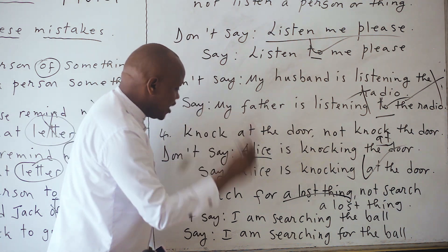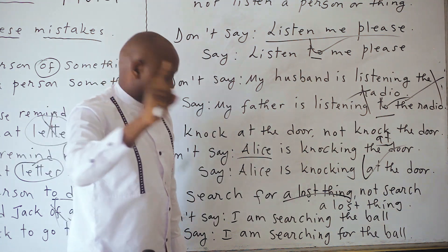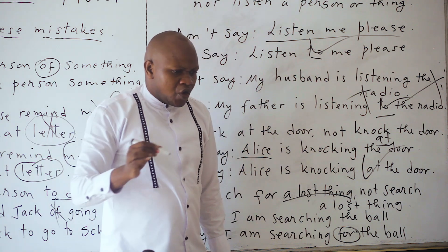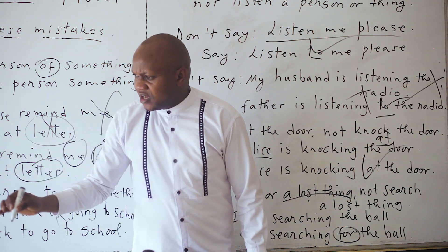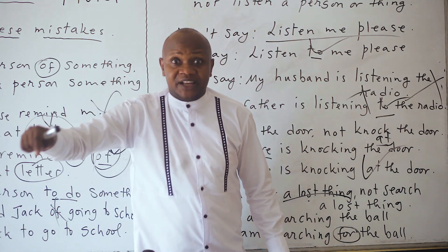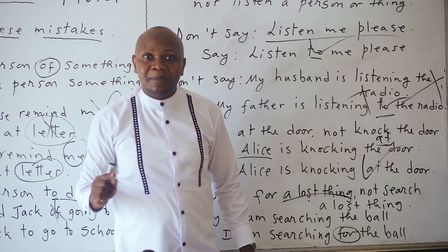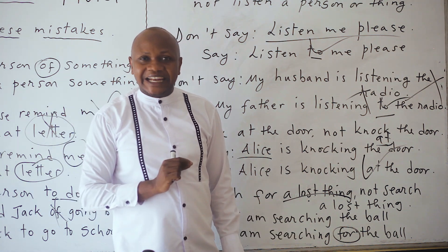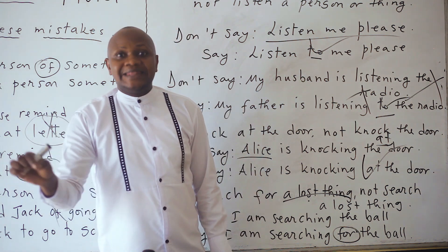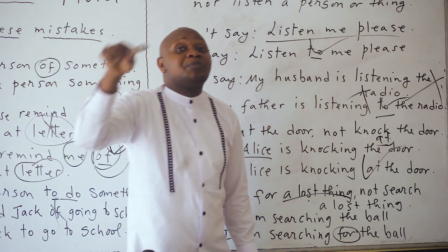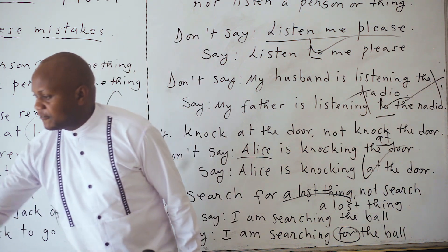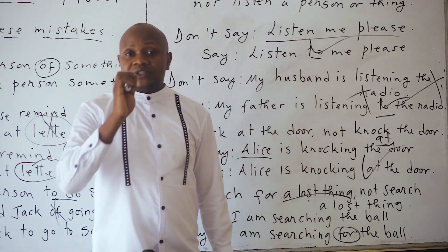Don't say 'I am searching the ball' — it is a big mistake. You will say 'I am searching for the ball.' My friend, what are you searching for in this garden? I am searching for my ball. Don't say 'I am searching my ball' — that is a very big mistake in the English language. Yesterday I was searching for my ball in the garden. I am searching for my pen. You search for something; you don't search something.